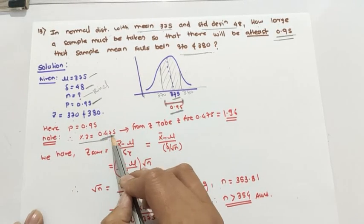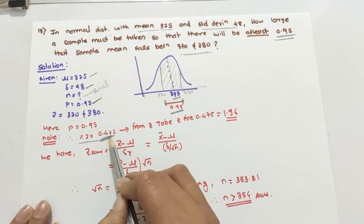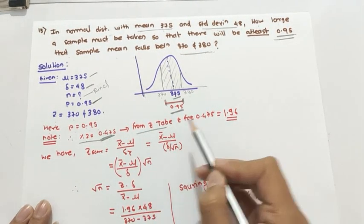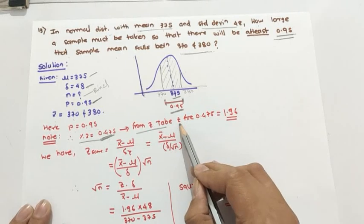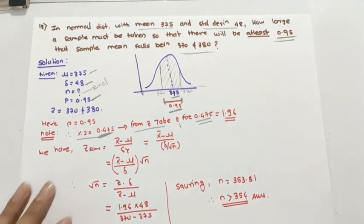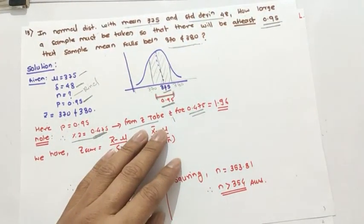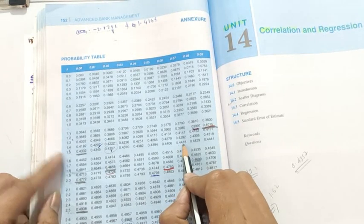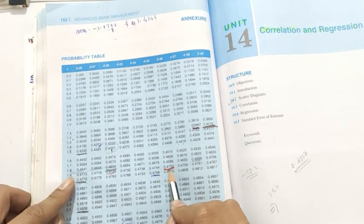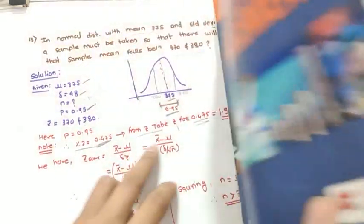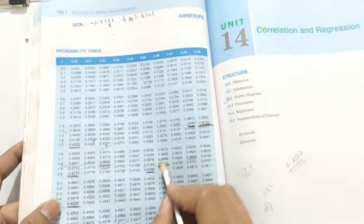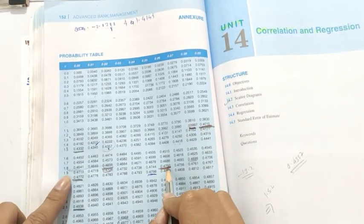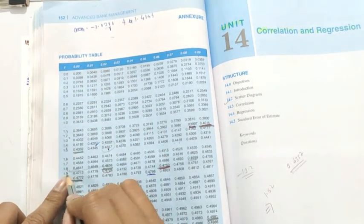We need to find the z score corresponding to 0.475 from the z-table. Looking up 0.475 in the table — we find 0.4750 corresponds to z equals 1.96, where row is 1.9 and column digit is 6. So z is taken as 1.96.